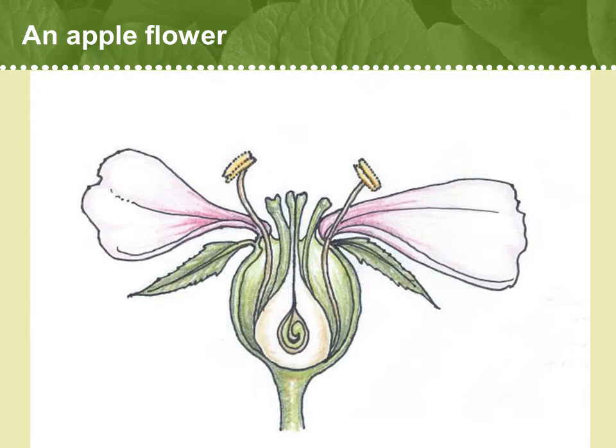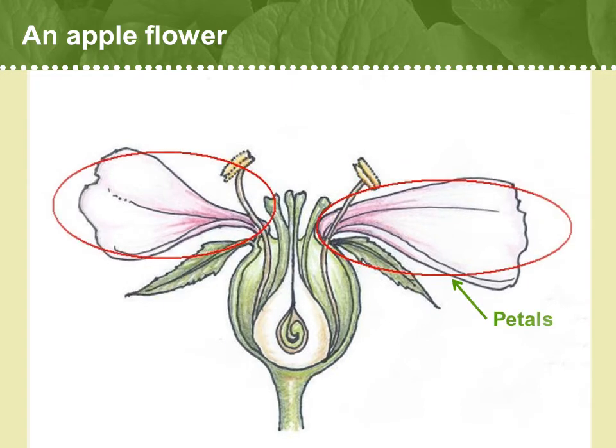Now we're going to turn the flower and look at it in cross-section. You'll probably first notice the colorful pink petals that surround the reproductive parts of the flower. Petals often attract pollinators, and some have patterns visible only in the ultraviolet, that actually guide the pollinator toward the center of the flower. Aptly, these are called nectar guides.